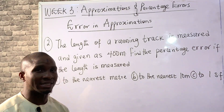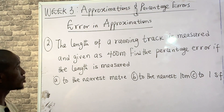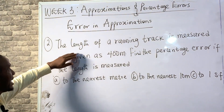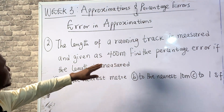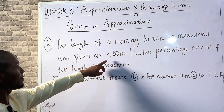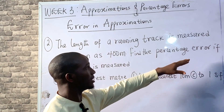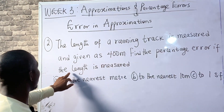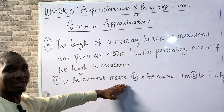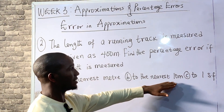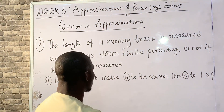We'll be looking at a second example on error in approximation. Example two: the length of a running track is measured and given as 400 meters. Find the percentage error if the length is measured: (a) to the nearest meter, (b) to the nearest 10 meters, (c) to one significant figure.